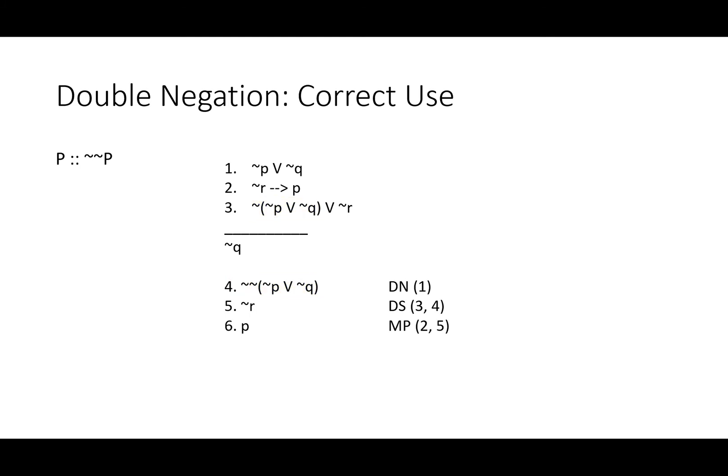And allows us to do a modus ponens. But we'll need another double negation if we're going to do a disjunctive syllogism. And finally, we've gotten to the end with not Q.